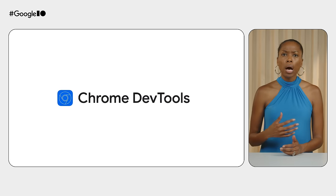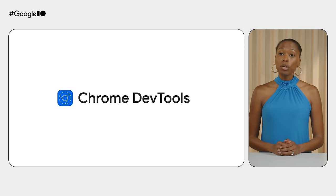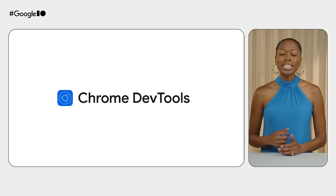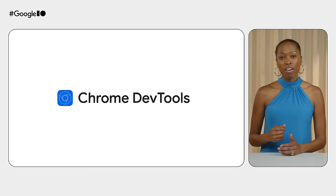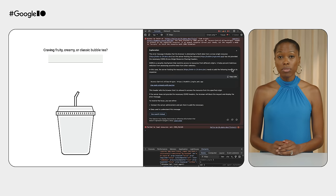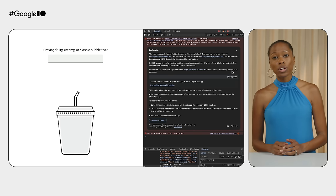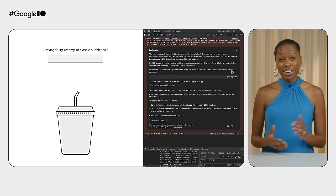AI can also vastly improve developer workflows. Chrome DevTools is one of the most popular ways to debug and troubleshoot your app, so we're bringing Gemini to make Chrome DevTools easier than ever. Gemini will now generate insights right in your Chrome DevTools — it will help you understand messages, errors, what the problem is, and even how to fix it. Chrome DevTools Console Insights is available now. Make sure to try it out.